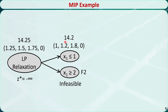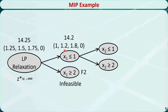This subproblem is not fathomed because 14.2 is not less than or equal to the current z* value, and some integer-restricted variables still have fractional numbers. We pick x2 as the branch variable and formulate two subproblems. One is the original linear programming relaxation with two additional constraints: x1 ≤ 1 and x2 ≤ 1. The other is the original linear programming relaxation with two additional constraints: x1 ≤ 1 and x2 ≥ 2.